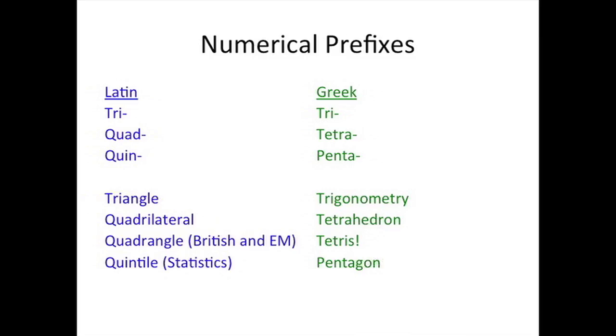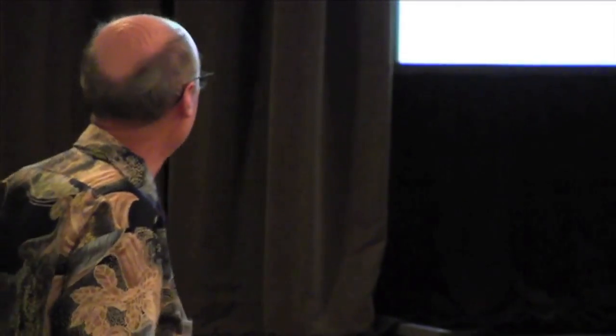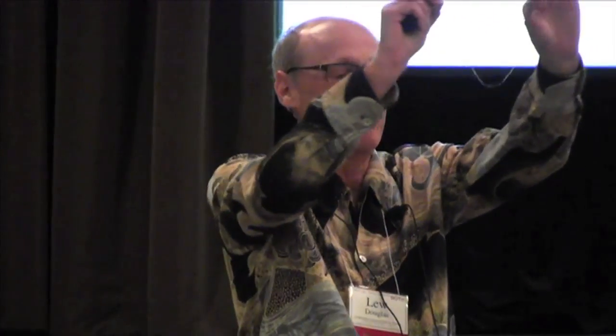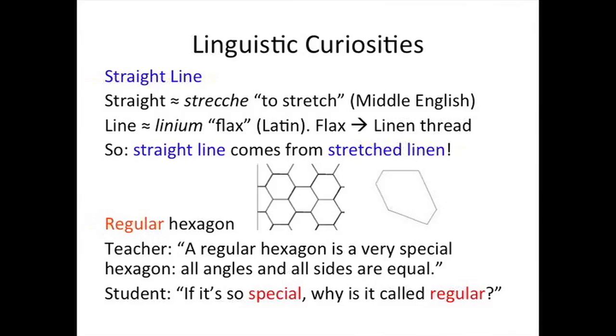In Britain they say quadrangle. Straight line — it's the same root as stretched linen. That's where it comes from.